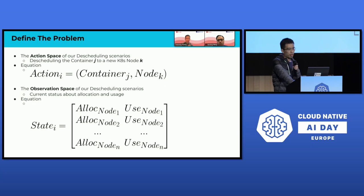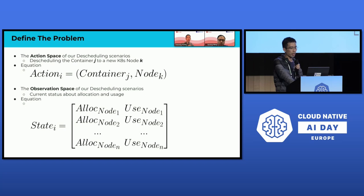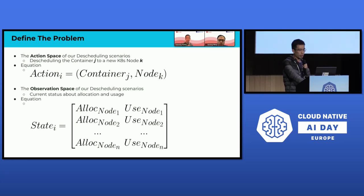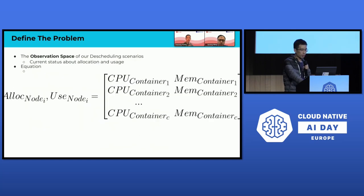Precisely defining the action and observation spaces is essential in reinforcement learning. The action space includes all potential actions the agent may take. In our descheduling scenario, we define it as a pair comprising a container and a worker node. The observation space includes all possible states the agent may observe. For descheduling, this means representing resource allocation and usage across the cluster. We represent these using metrics that include each worker node's allocation and usage states, which can be further detailed to include every container's resource allocation and usage, allowing the agent to accurately assess the state of each container on each node.